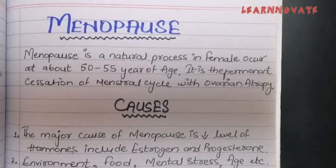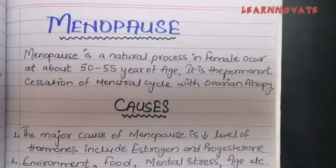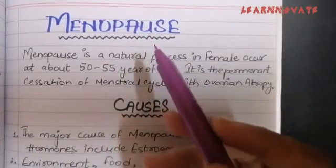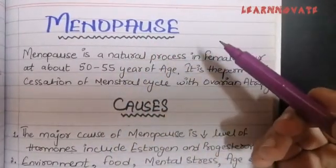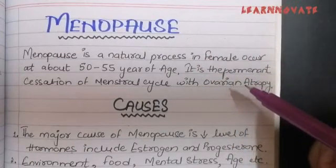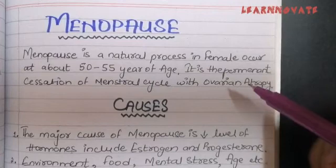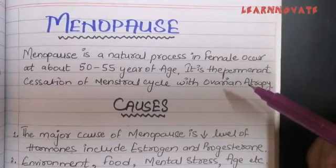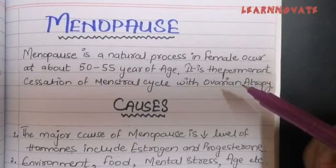This permanent cessation of the menstrual cycle means that a woman cannot menstruate. If a woman cannot menstruate, she cannot become pregnant again, because the menstrual cycle is very important for pregnancy. Also, because of ovarian atrophy, the hormones produced by the ovary — mainly estrogen and progesterone — decrease, which is why the reproductive cycle stops.